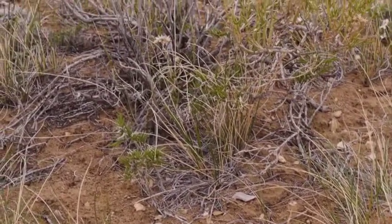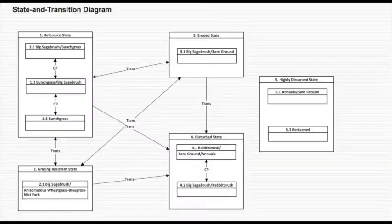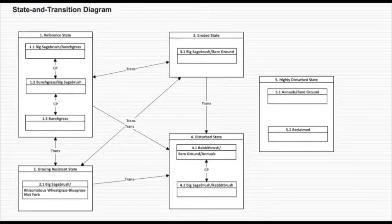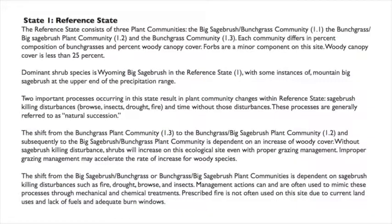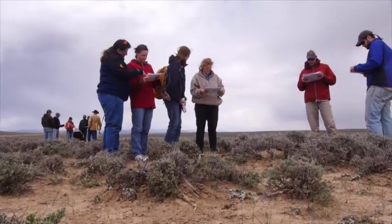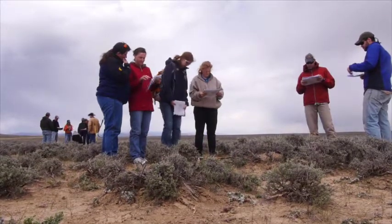Based on our observations, we may or may not be in the reference state. Once we decide whether we are or not, and if we're not, we choose the state we think we're in. Critically, once you think you understand the model, you shouldn't just use the state and transition model alone — it's really important to go to the plant community narratives contained within the ecological site description and compare what you're reading to what you're seeing on the ground.